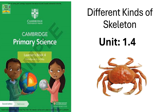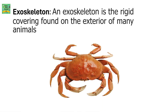Different kinds of skeleton, Unit 1.4. The first type of skeleton is an exoskeleton. An exoskeleton is the rigid covering found on the exterior of many animals, such as a crab.